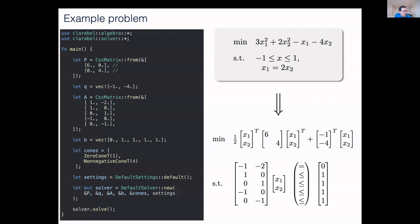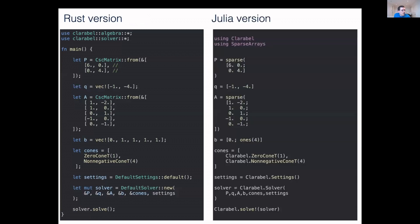There's the Rust one on the left, and you just basically type in your problem and solve it. The nice thing is that the Julia version looks almost exactly the same. We also have the Python version, which also looks almost exactly the same. It's very handy for trying things in different languages. Internally, it's a very similar story. The code looks almost identical between the two versions.